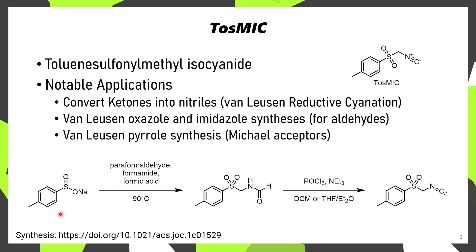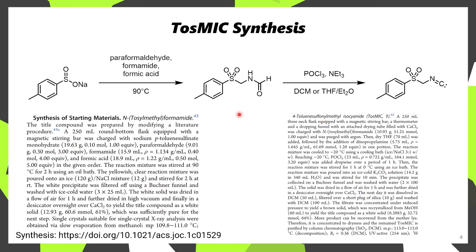The synthesis of TOSMIC is quite straightforward. You start with sodium toluene sulfenate, which is then reacted with paraformaldehyde and formamide in the presence of formic acid, giving a formamide product. The formamide is then dehydrated using POCl3, affording the isocyanide. Isocyanides can be drawn in two different resonance structures: one with a positive charge on nitrogen and negative on carbon, or alternatively the carbon drawn with a carbene. A quick reference for preparation is included for convenience.